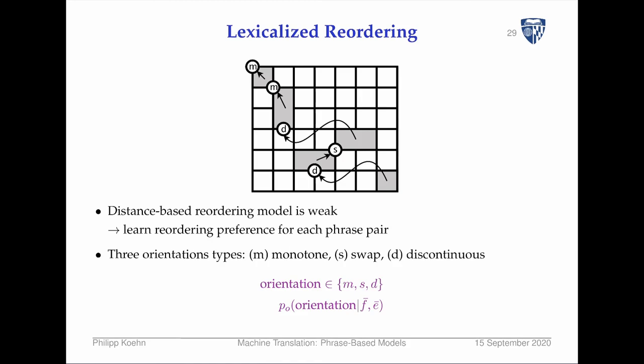The idea is to condition reordering on the words involved — therefore it's called lexicalized reordering. We start at the beginning of a sentence. The way you read this is in a typical word alignment matrix: here are the English words we produce, and these are the foreign source words.